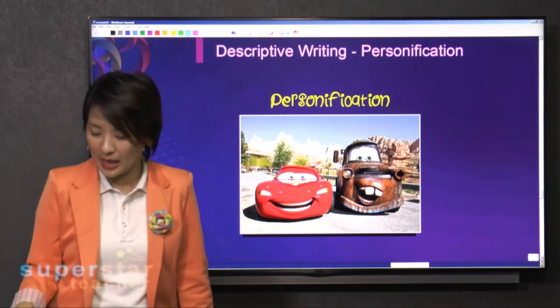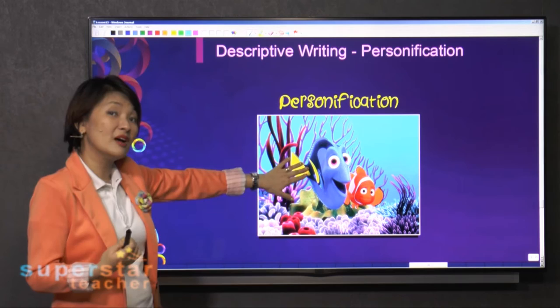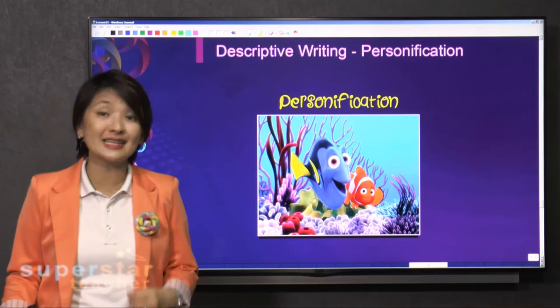Another one would be Finding Nemo. So in Finding Nemo, you will find that this fish has a character. It is very forgetful, and of course Nemo is an ever-curious one. So these are personification, but let me give you concrete examples.